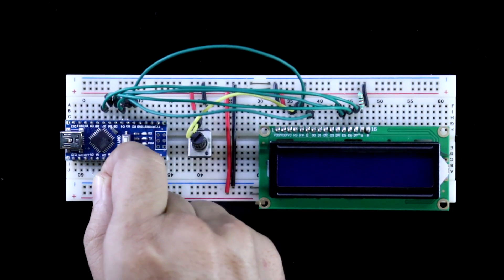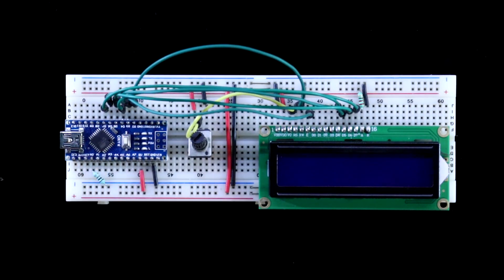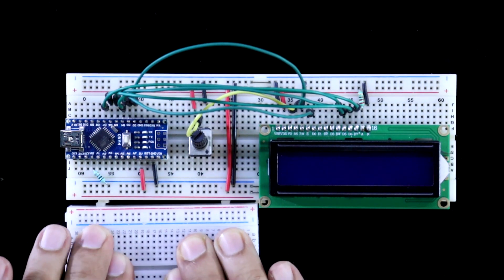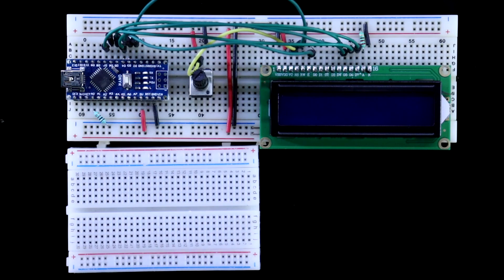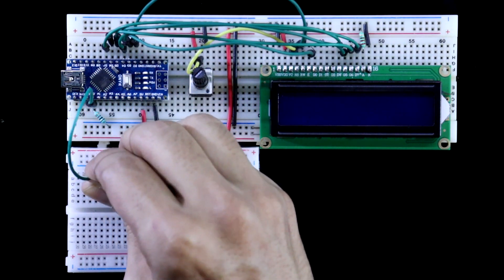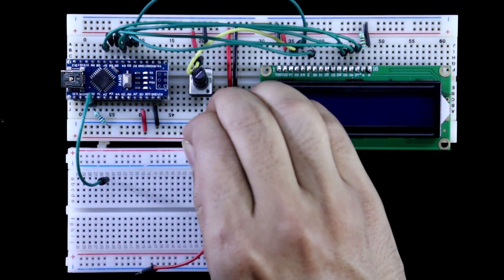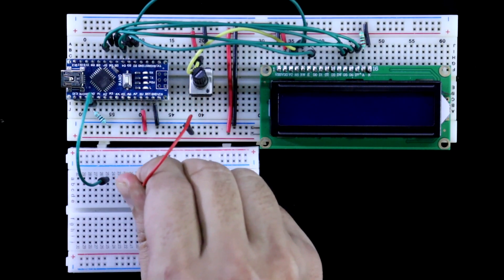1 kilo ohms resistor is connected to the ground and the A0 pin. Now in this breadboard, I will test the resistor. Here it is terminal A, it is connected to A0 pin, and terminal B which is connected to plus 5V.